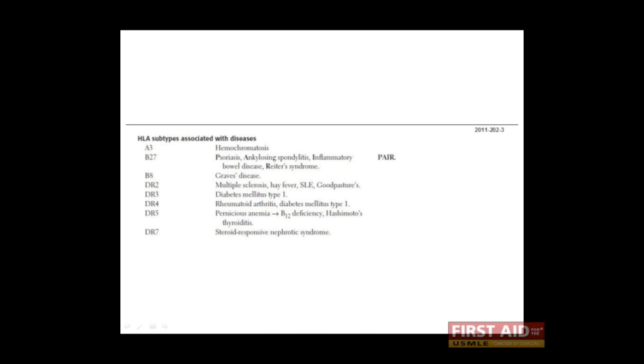Interestingly, certain allelic variants of the HLA genes are associated with autoimmune and other kinds of diseases. Here we see that a few variants of the class 1 molecules, namely HLA A3, HLA B27, and HLA B8, are associated with the diseases that you see on the right. Allelic variants in the class 2 molecules are associated with other diseases, many of which are autoimmune in nature.